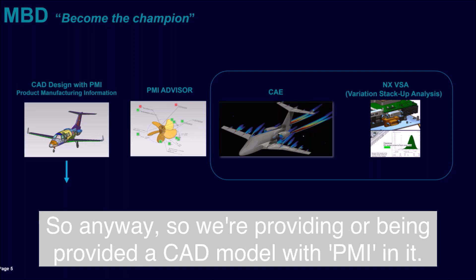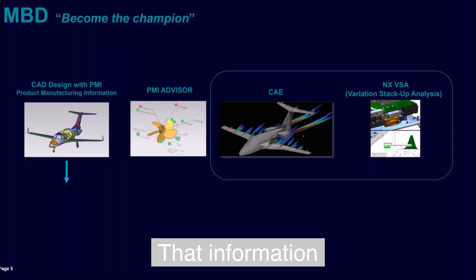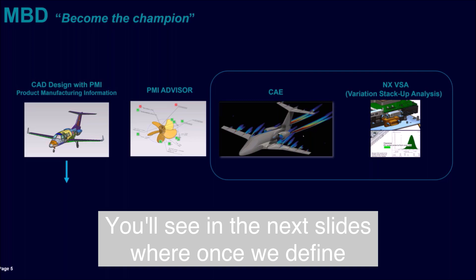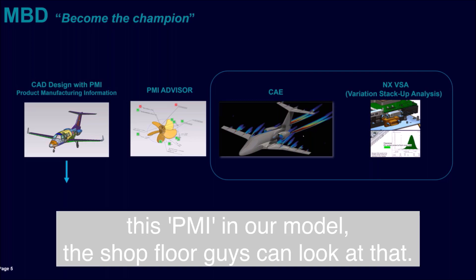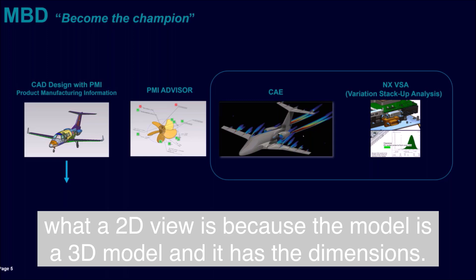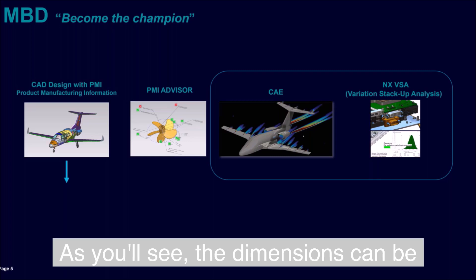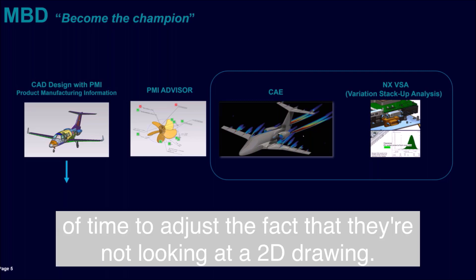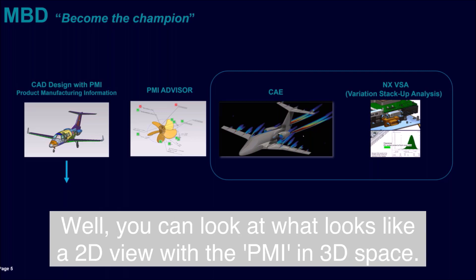We are being provided a CAD model with PMI in it. That information is basically a replacement for 2D drawings, or it is the modern use of it. You'll see in the next slides that once we define PMI in our model, shop floor personnel no longer need to interpret a 2D view, because the model is 3D and has the dimensions. The dimensions can be organized by views to help make this transition easier.